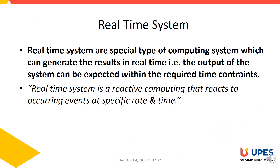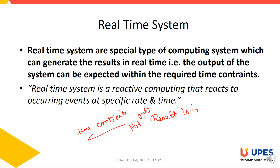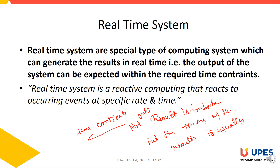Real-time systems are a special type of computing system which can generate results in real-time. Real-time means the results should be generated within specific time limits — that is, time constraints. In real-time systems, not only is the result important, but the timing of the result is equally important. If a real-time system does not follow the real-time constraint, it may lead to catastrophic results.